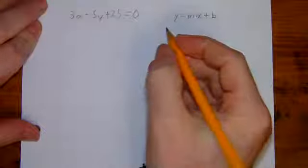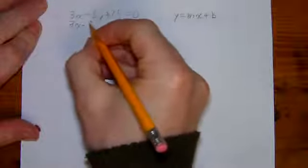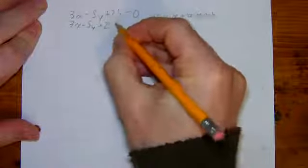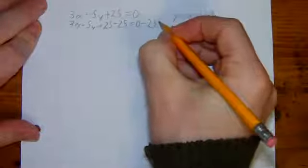So I want y by itself. I've got lots of other things over here. So first of all, I'm going to get rid of the plus 25. And I'm going to do that, of course, by subtracting 25 on both sides. And it keeps it equal.